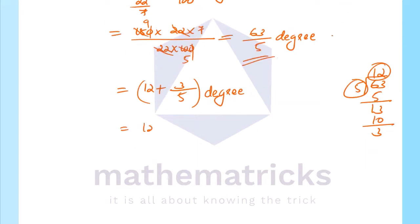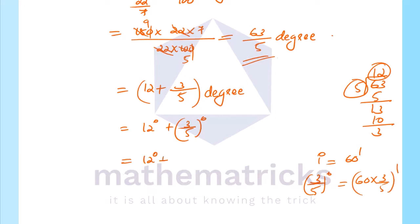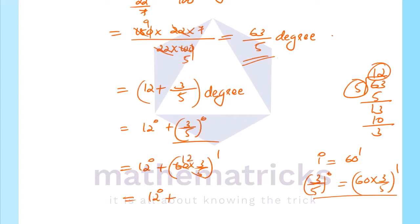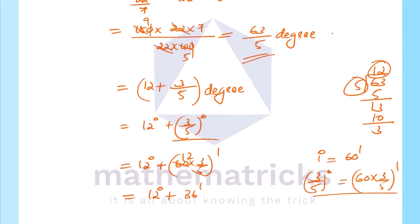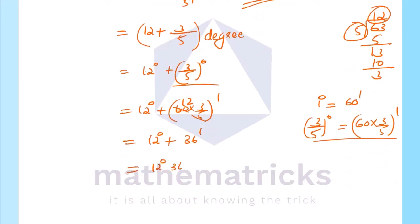That gives 12 degrees and 3/5 of a degree remainder. Since 1 degree equals 60 minutes, 3/5 × 60 = 36 minutes. So the final answer is 12 degrees 36 minutes.